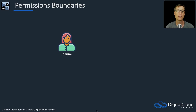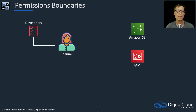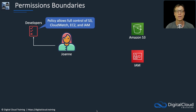Let's look at a situation — we've got Joanne here, and she wants to access an S3 bucket and create a user in IAM. She actually has a policy applied to her, which is a developer policy. That allows full control of S3, CloudWatch, EC2, and IAM. So she should therefore be able to perform any action she wants on S3 or IAM.